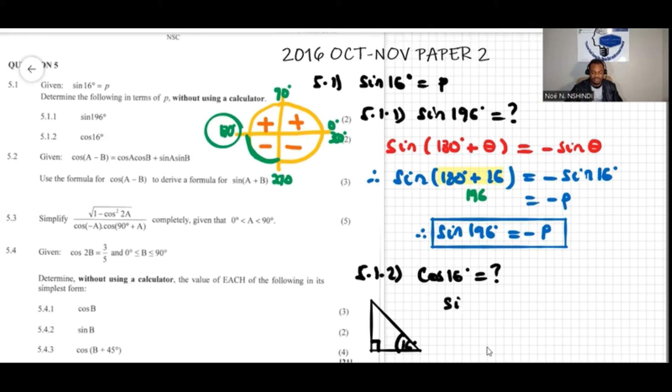So sine of 16 degrees is equal to p. This is what it is given. We do know that the sine function of the angle is equal to opposite side over hypotenuse. So this is opposite and that's hypotenuse.